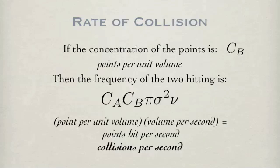The other spheres, which have been transformed to a set of points, have a concentration, or density, of concentration of b. The frequency of them hitting is simply the volume swept out by a multiplied by the density of b, yielding the points hit per second, meaning the collisions per second.